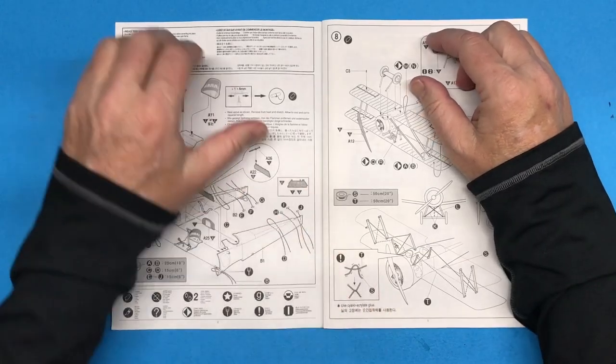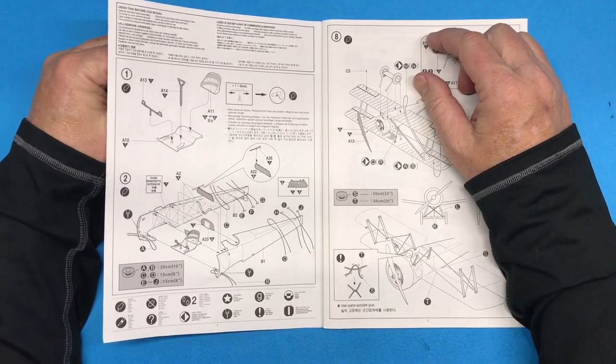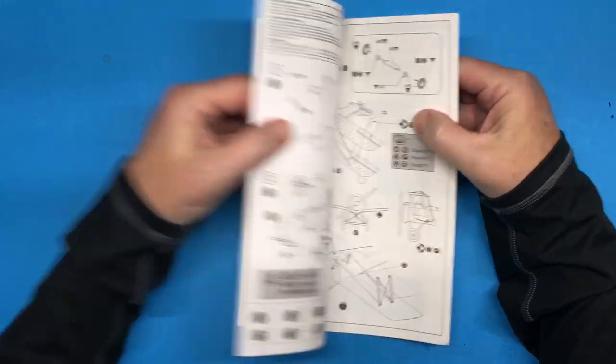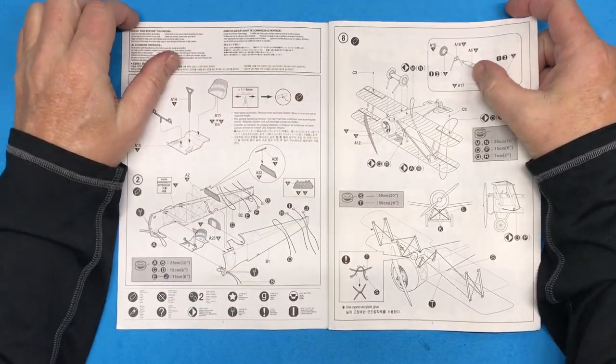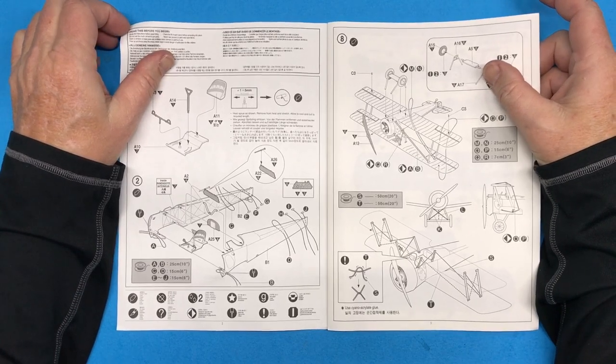Hi everybody and welcome back to Plastic Models by Regular Dude. In part two of the Academy 1:32 scale Sopwith Camel, I am going to start construction on this kit. This is not going to be a step-by-step thing.